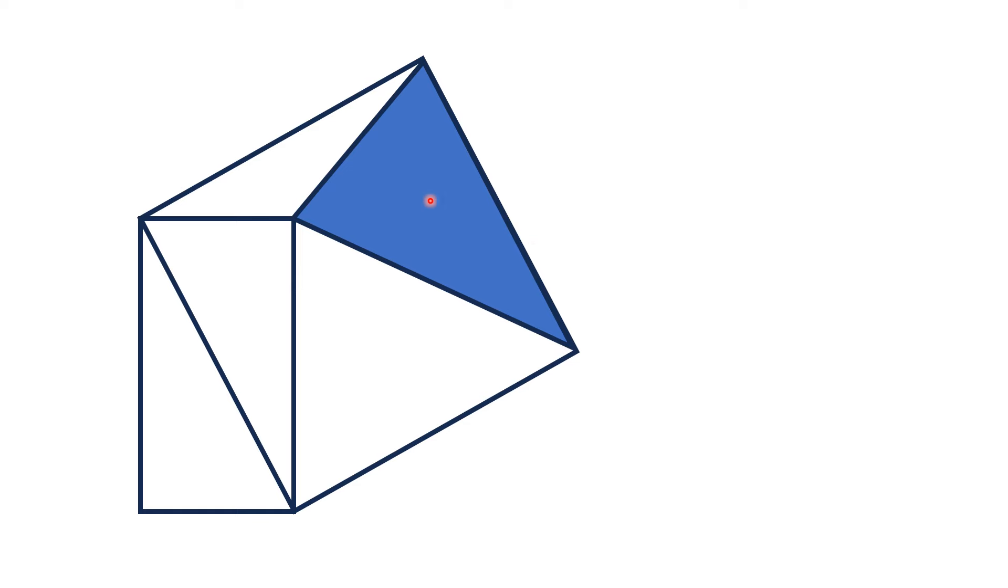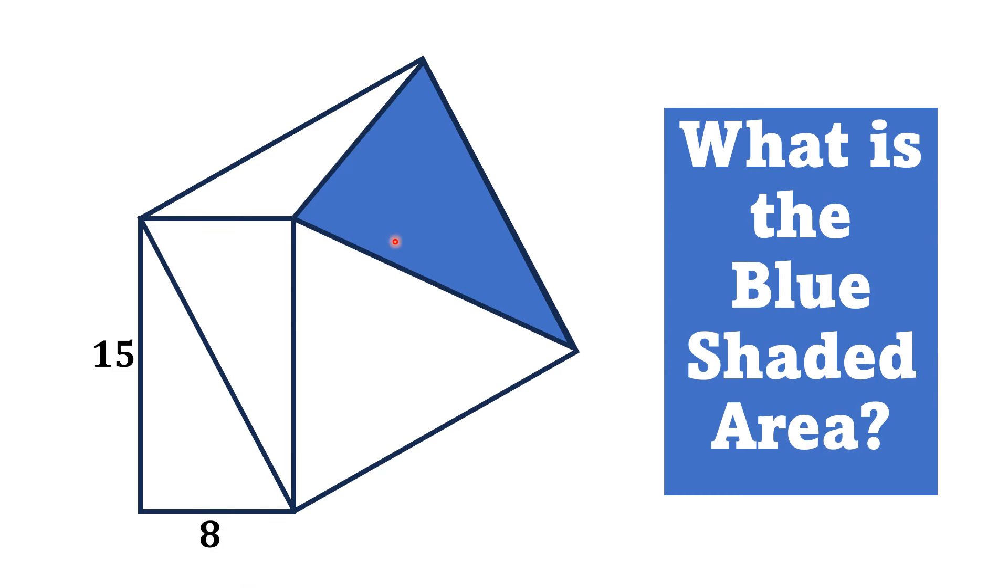This triangle is shaded blue. If the side lengths of this rectangle are 15 and 8, then by this data we have to find the area of this blue shaded triangle.